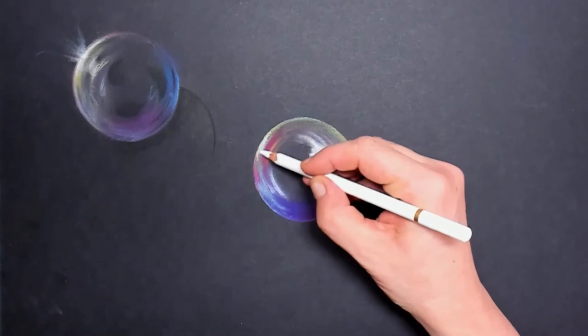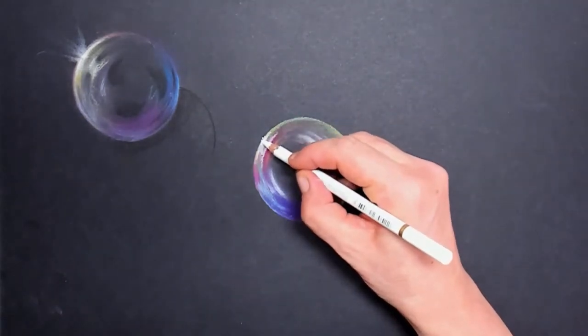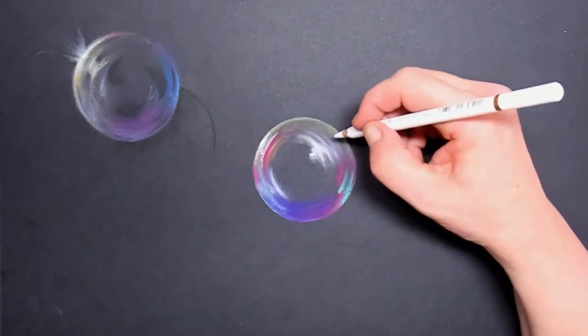Here on the edge, I also draw in a little bit of white. I want to get that bubble to look rounded.